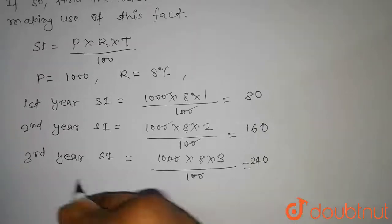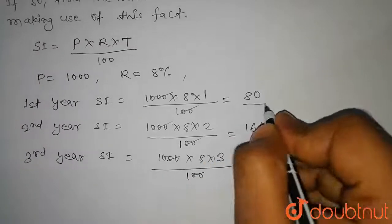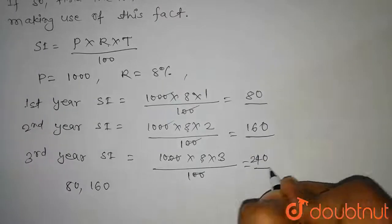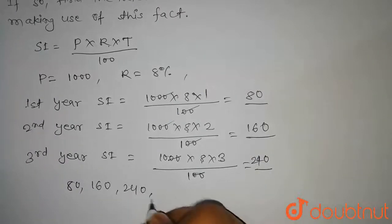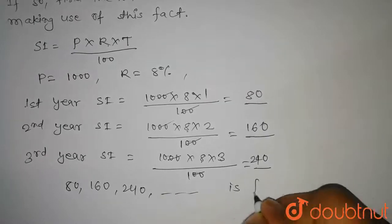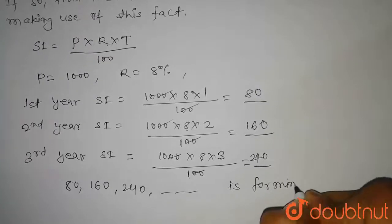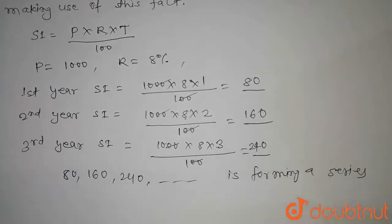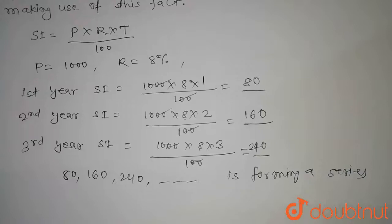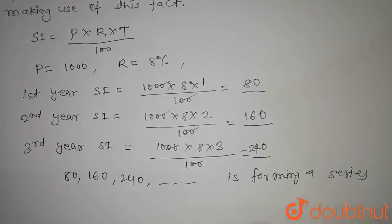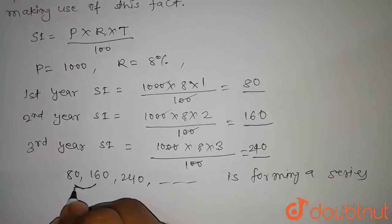Therefore, the interest at the end of first year, second year, and third year is forming a series. Now we have to check whether this series is forming an AP or not. To do this we have to find out the common difference between the two consecutive terms.